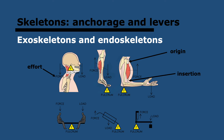Now onto skeletons. The skeleton is a hard framework that supports and protects an animal's body. There are exoskeletons, such as those arthropods like spiders have, which are outside the body. Endoskeletons are internal and are found in vertebrates such as humans. Skeletons act as anchorage for muscles and also act as levers. A muscle is normally connected to two parts of a skeleton: the insertion, where contraction causes movement, and the origin, which is fixed and does not cause movement. Bones act as levers — they can change the size and direction of force. The pivot point is called the fulcrum, which is the joint where one bone meets another. The force applied to the lever is called effort, and it is applied by muscles via the tendons to the bone.